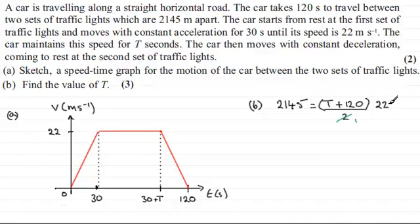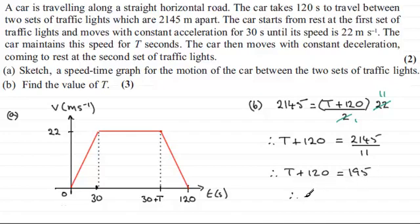Now the 2 will cancel quite nicely into the 22, which will be 11. If I divide both sides by 11, it leaves us with t plus 120 equals 2145 divided by 11. If you work that out, you end up with t plus 120 equals 195. Take away 120 from both sides, and 195 take away 120 leaves us with 75.